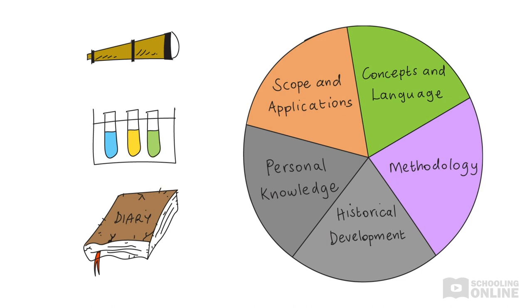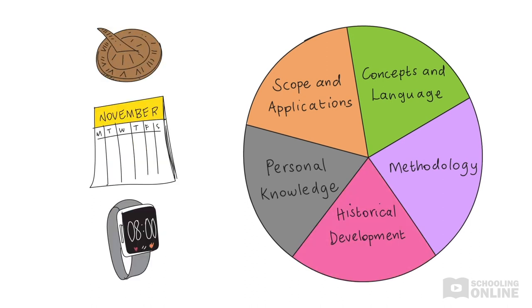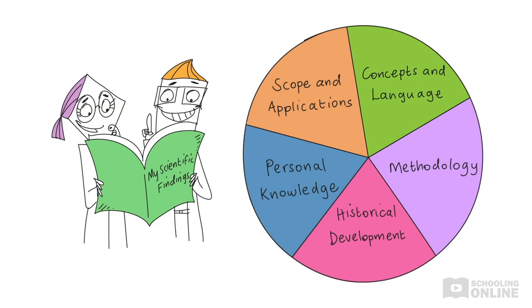Then we have methodology, which refers to the distinct methods that each area uses to produce knowledge. We'll also investigate the historical development of each area of knowledge, focusing on changes over time. Finally, don't forget the links to personal knowledge. Individuals can personally contribute to shared knowledge within an area of knowledge, just as shared knowledge can impact individuals personally.